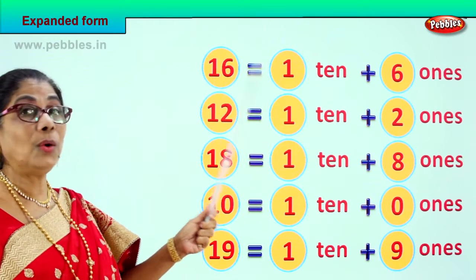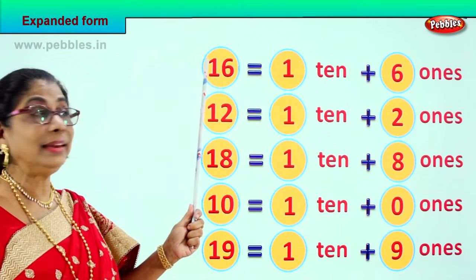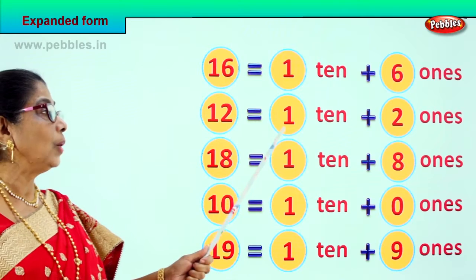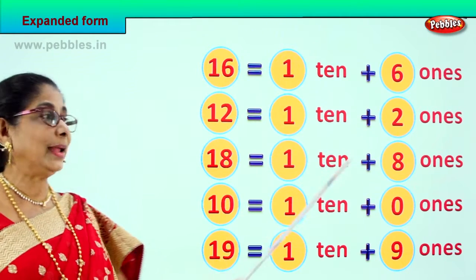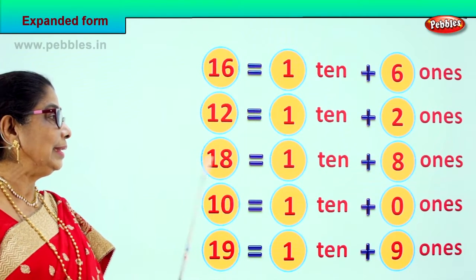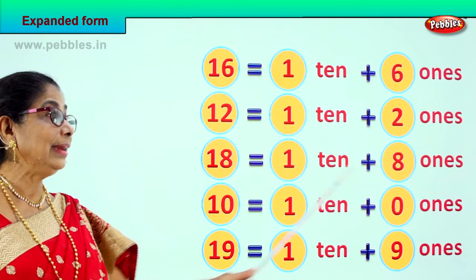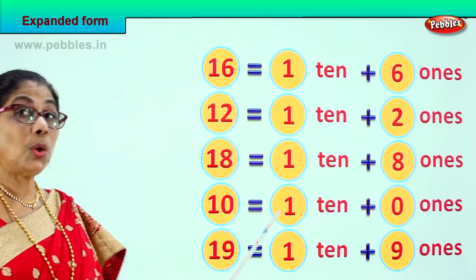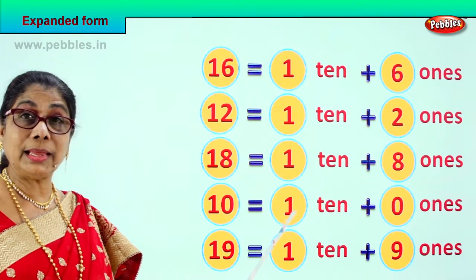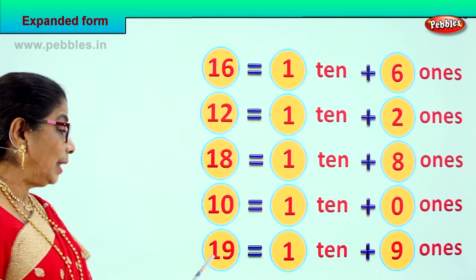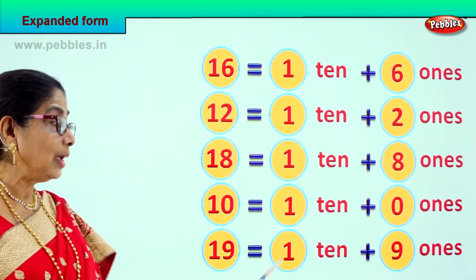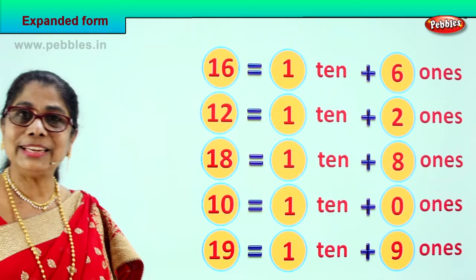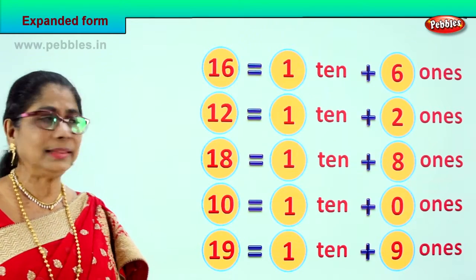16 is 1 ten, 6 ones. 12 is 1 ten, 2 ones. 18 is 1 ten, 8 ones. 10 is 1 ten, 0 ones. 19 is 1 ten, 9 ones. Did you enjoy? Let's take the next set.